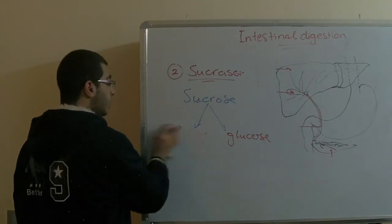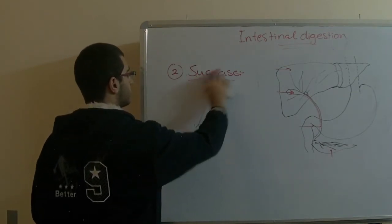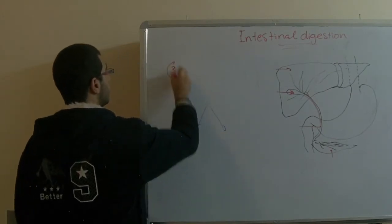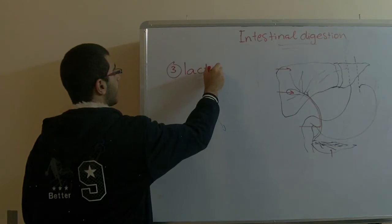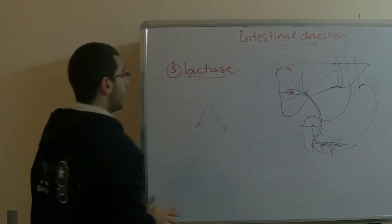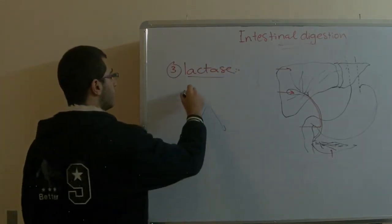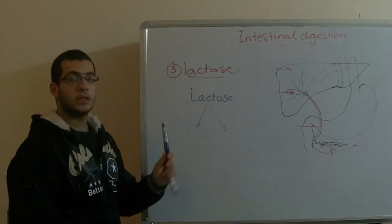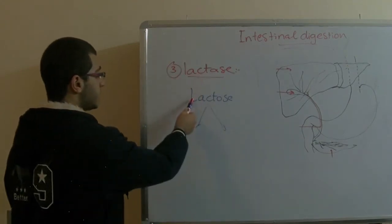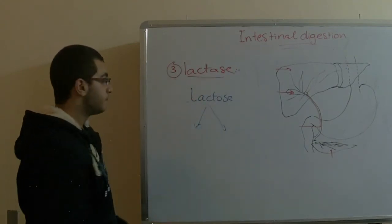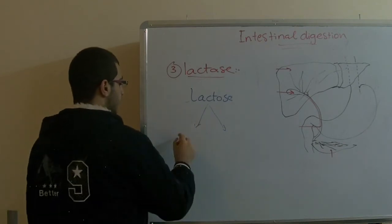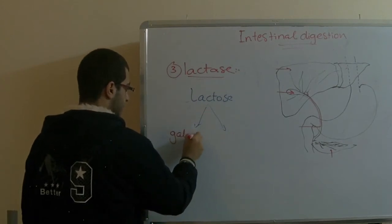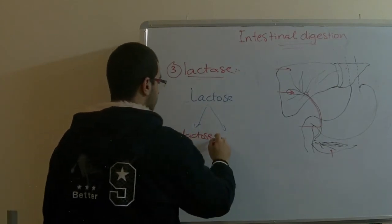The third one is called the lactase enzyme. This lactase enzyme breaks down the bonds between the lactose or the milk sugar. The lactose is the sugar which is found in the milk. The lactase breaks down the bonds between the lactose to yield galactose and glucose.